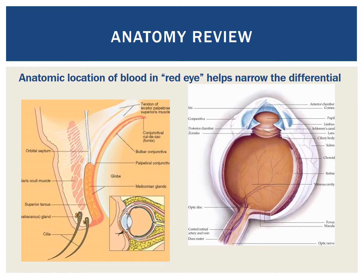The cross-section of an eyelid on the left demonstrates the conjunctiva. The conjunctiva is a thin, clear structure containing blood vessels that covers the inside of the eyelids — this portion is called the palpebral conjunctiva — as well as the sclera, the white of the eye, which is called the bulbar conjunctiva. The 3D projection of an eye on the right helps us identify the anterior chamber, which is the space behind the clear cornea at the front of the eye and in front of the colored iris. The anterior chamber is filled with a clear fluid called aqueous humor in normal circumstances.